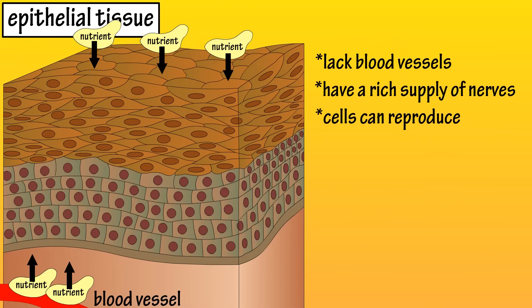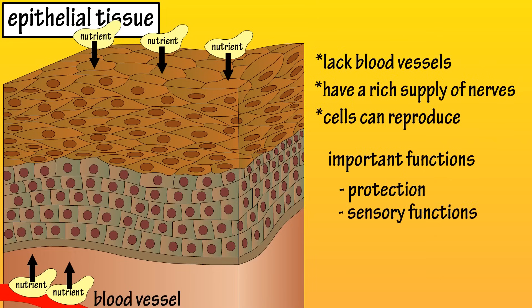Epithelial tissue has several important functions. It provides protection, as the skin protects the internal body from bacteria and other harmful substances. It provides sensory functions in the skin, nose, eyes, and ears. Epithelial cells are also important in secretions, as they secrete hormones, sweat, digestive juices, and mucus. And epithelial tissue is important in absorption, such as nutrients in the gut and the exchange of gases in the lungs.